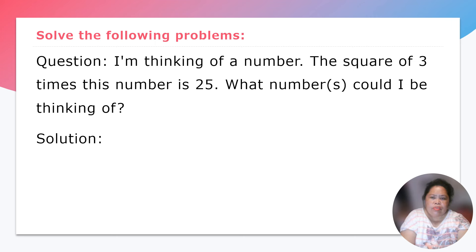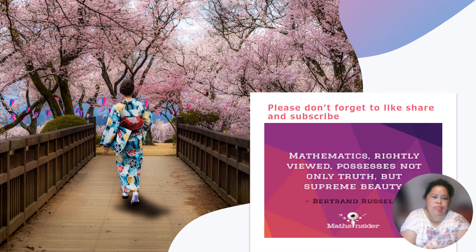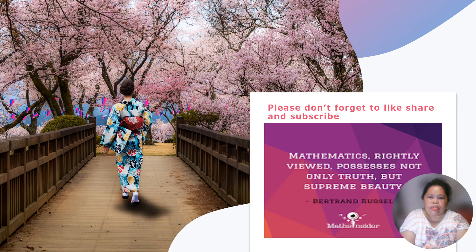So I'm thinking of a number, the square of 3 times this number is 25. What number could I be thinking of? All right, so we can discuss this problem. And please don't forget to like, share, and subscribe. Mathematics rightly viewed possess not only truth, but supreme beauty, according to Bernard Rizzo. That's all guys. Thank you so much. I love you all. Bye.